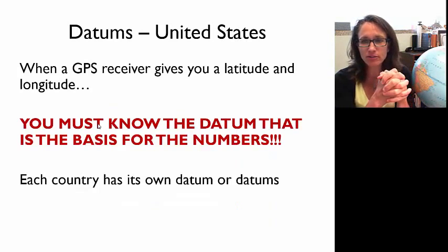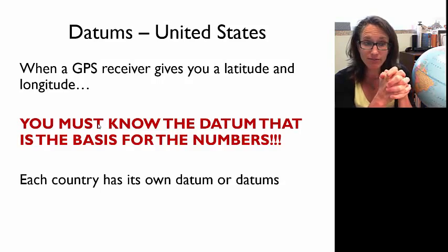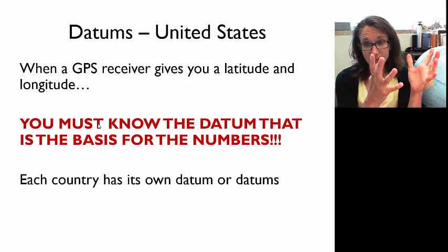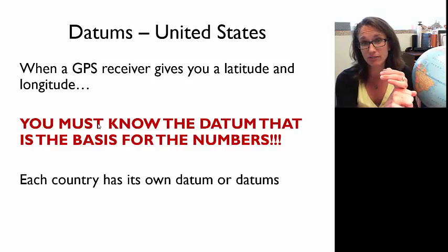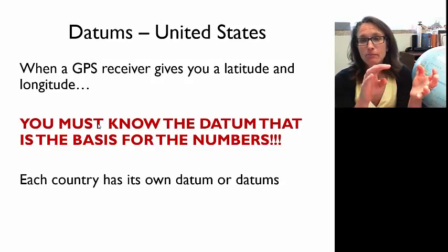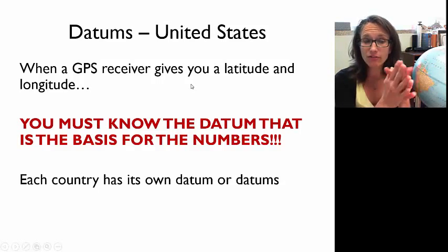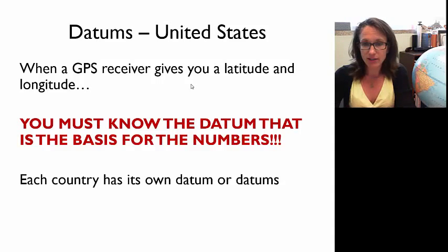When you use a GPS receiver and it gives you a latitude and longitude, you must know the datum that is the basis for the numbers. Pay attention too that if you're traveling and working in another country, each country has its own datum, or maybe multiple ones. For our purposes in this class, we'll be using WGS 84 mostly, but you may come across data referenced to NAD 27. When you travel or work in another country, make sure you know what datum your data are referenced to.